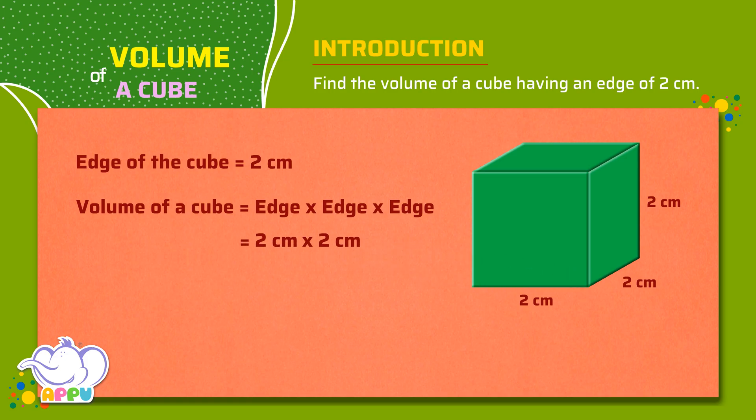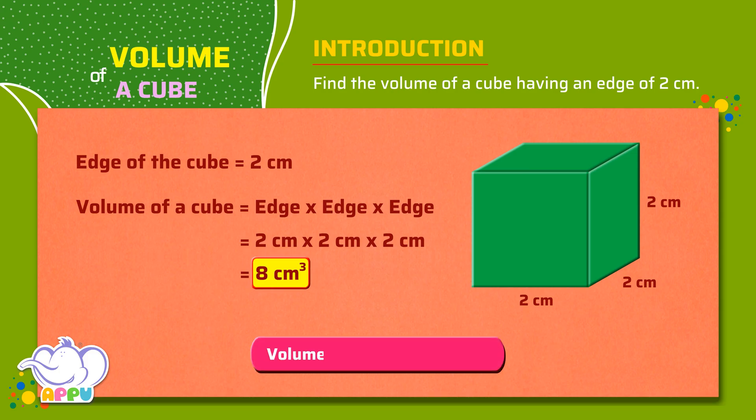So volume of a cube equals two centimeters times two centimeters times two centimeters equals eight cubic centimeters. Volume of a cube is eight cubic centimeters.